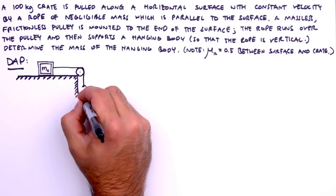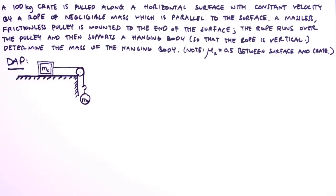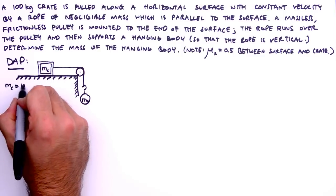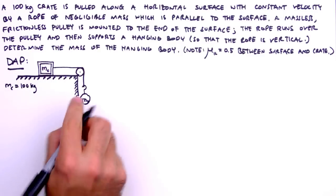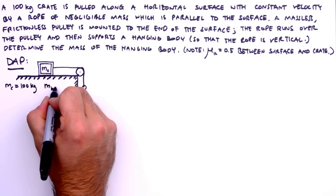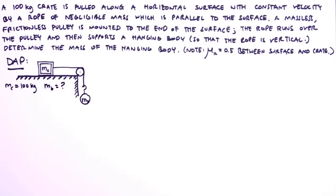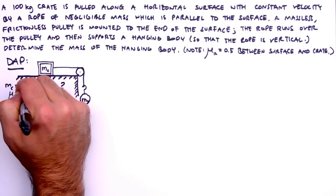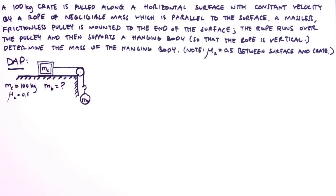Now, we identify our knowns and our unknowns. We're given the mass of the crate, 100 kilograms, and we're looking for the mass of the hanging body, so we'll note that with a question mark. We know how sticky the interface is between surface and crate, that is to say, we know its coefficient of kinetic friction, 0.5.